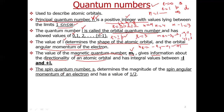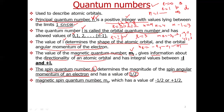The next quantum number is called the spin quantum number, denoted by symbol small s. It determines the spin angular momentum of an electron and has a value of one-half. The next quantum number is the magnetic spin quantum number, denoted by small ms. It can have 2 values for an electron: either −½ or +½.